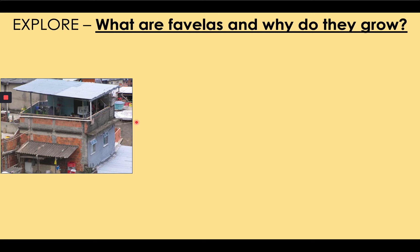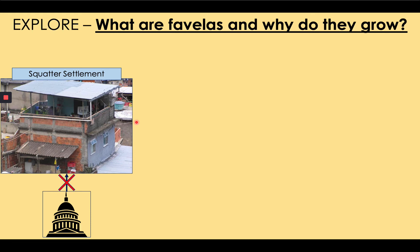A favela starts as a squatter settlement, meaning the house and settlement are built illegally — the people have not got permission from the government to build those houses. Consequently these houses can be demolished at any time by the government. This happened frequently in Rio in the 1970s and 80s. Squatter settlements often lack government investment, so they have low quality housing improved over time by residents using small incomes, adding concrete, brick, steel roofs and electricity — very little supplied by the government, unlike formal settlements such as Barra da Tijuca.